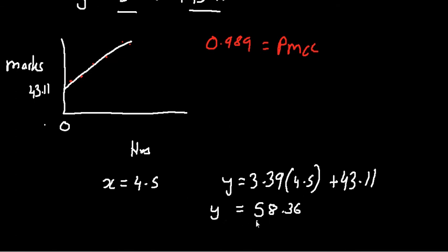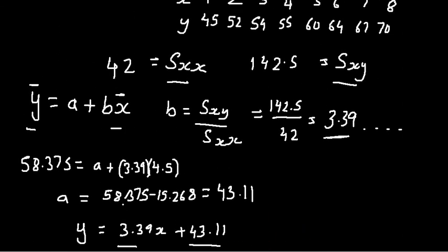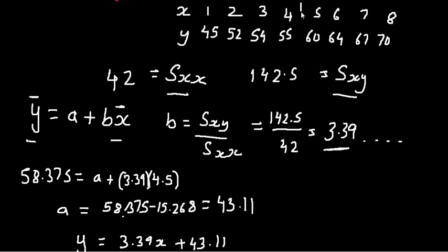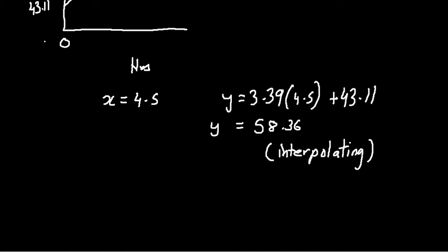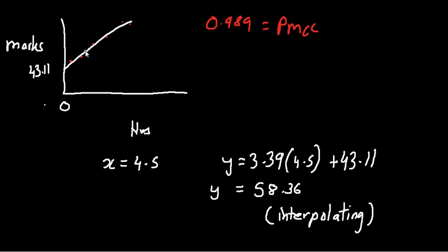They'll ask you whether this answer that you found here is it reliable. Now, you could say it is reliable because this value of 4.5 lies within your data set for x. This value of 4.5 lies within your data set for x. Therefore, it's reliable, or it could be summarized in one word: you are interpolating. That's what it means when you interpolate. You are predicting a value for y based on a value for x which falls within the data set for x. That's interpolating. That blue dot there, you're interpolating for y.